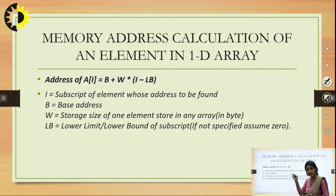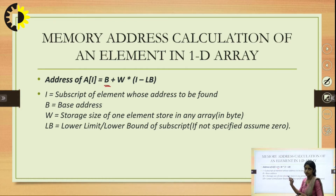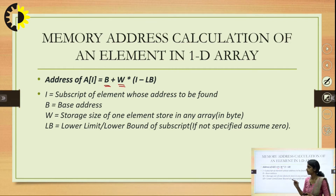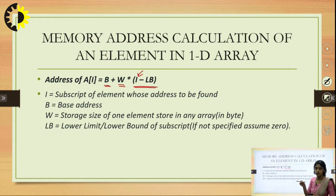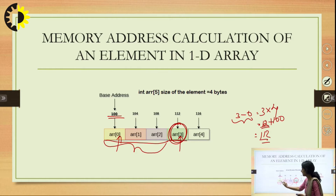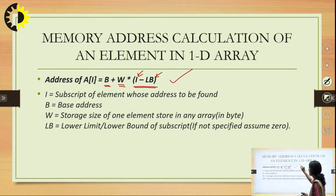Address of a[i] = B + w × (i − lb), where B is the base address (address of the first element in the array), w is the size of each element (for int in a 16-bit compiler it is 4 bytes; for character it is 1 byte), i is the index of the element whose address is to be calculated, and lb is the lower bound of the index. In the previous case lb was 0 and i was 3.